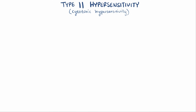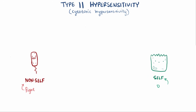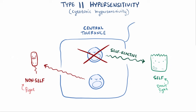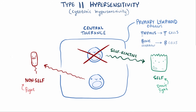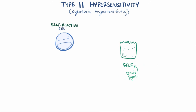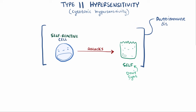Our immune system is set up to fight anything that's considered non-self. This works in large part because of a process called central tolerance, which is when developing immune cells that are self-reactive get destroyed or inactivated, whereas immune cells that aren't are allowed to survive. This happens while they're still in their primary lymphoid organs — the thymus for T cells and bone marrow for B cells. This process isn't perfect, and some self-reactive B and T cells will escape and can attack healthy tissue, resulting in autoimmune disease.